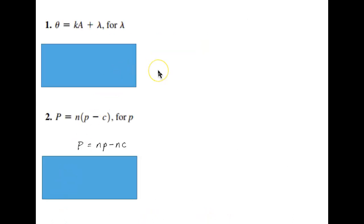So let's look at a couple more examples. In example one here, we've got theta equals k times a plus lambda. And we're asked to solve for lambda. That means we want to get this symbol right here by itself. And so we've got this stuff, ka, added to it. So the first thing we've got to do is get rid of that.